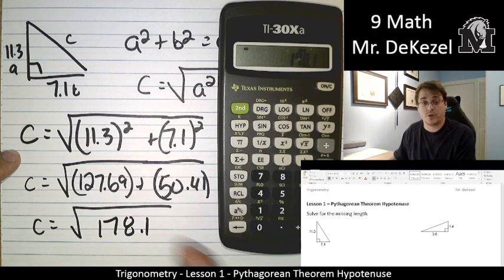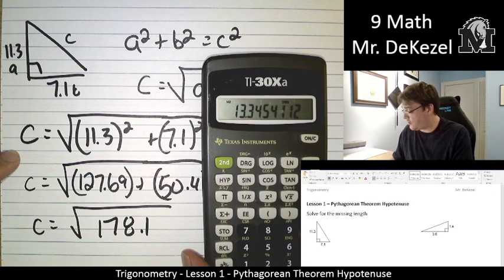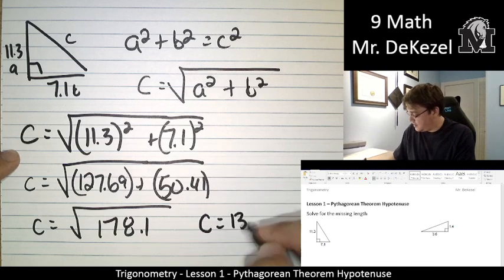Then we're going to go ahead and we're going to square root that in our last step, so we hit the square root button. It might be different on your calculator. Please double check, but we square root that to get 13.3. So C is equal to 13.3.